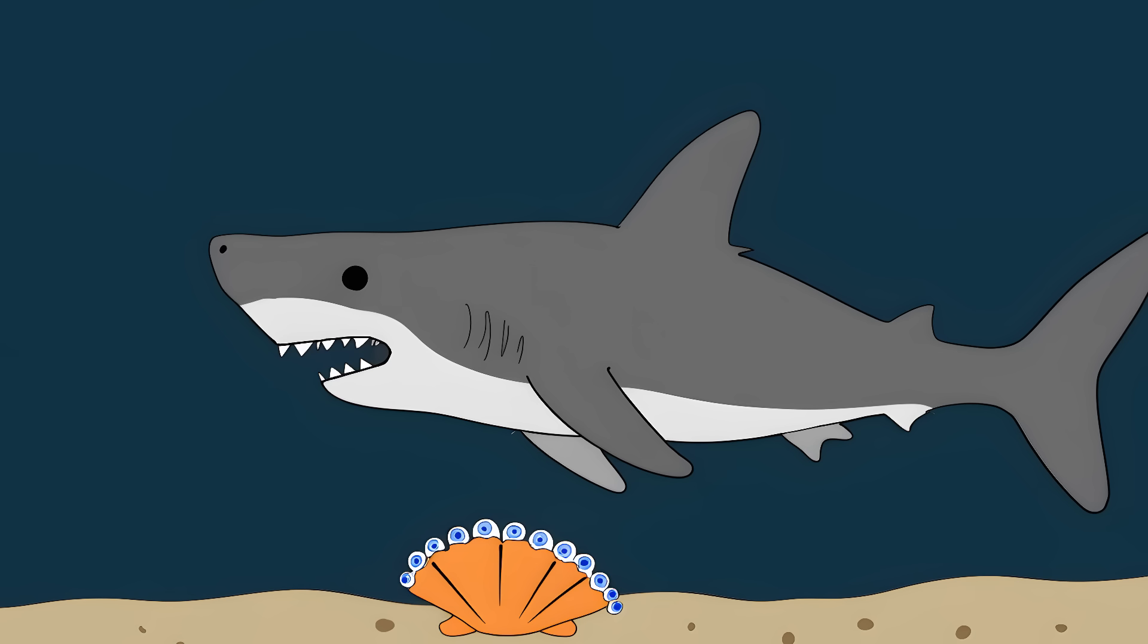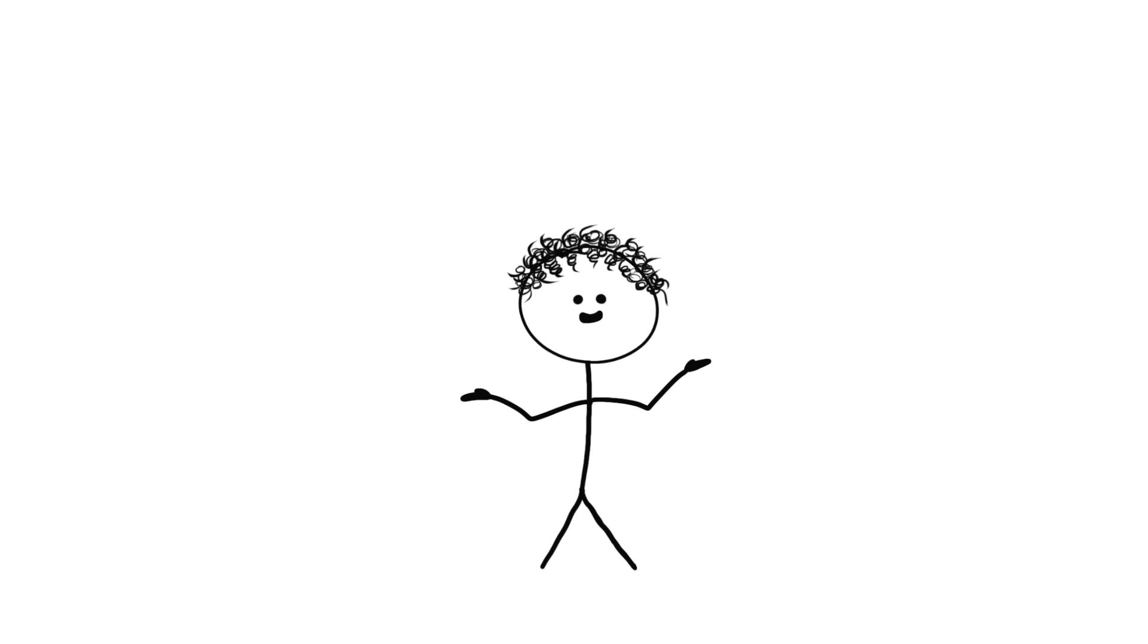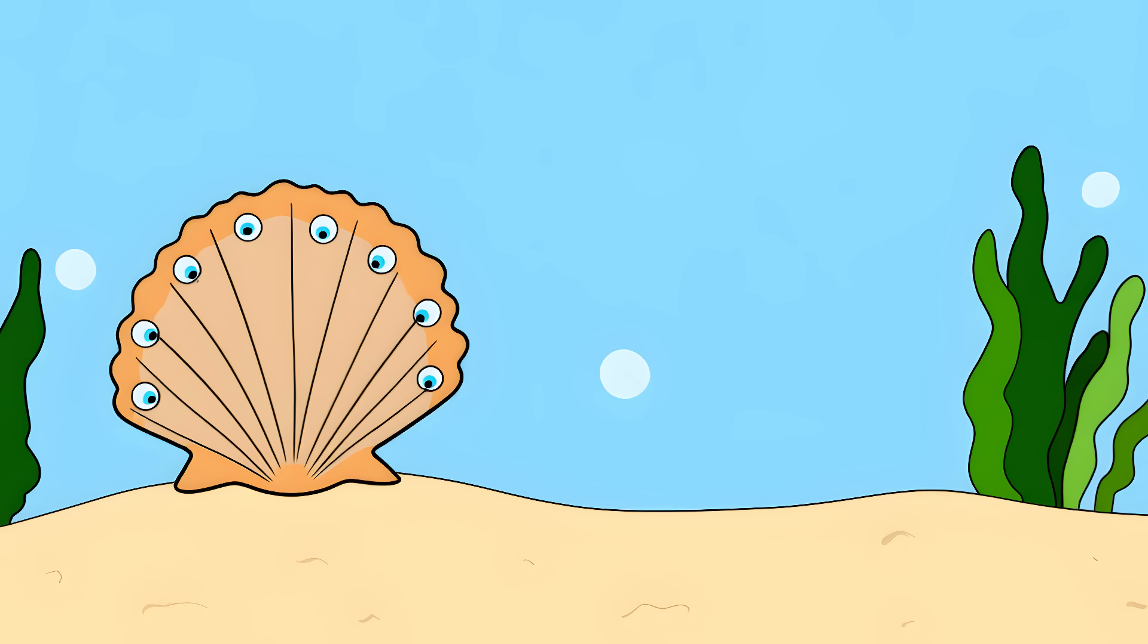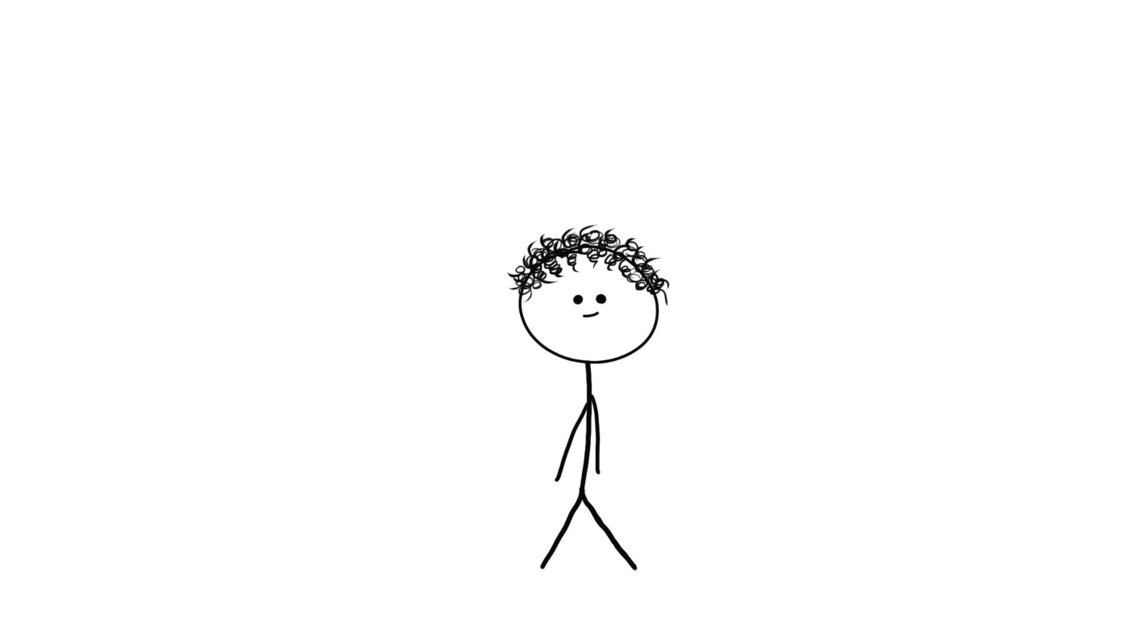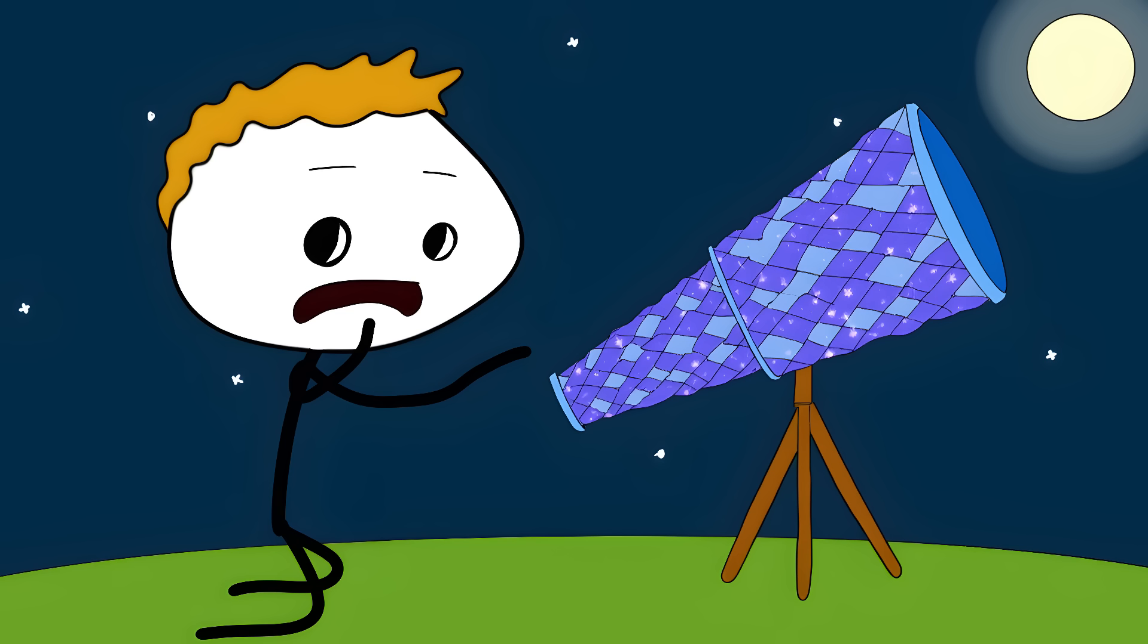Number 1: The Hundred Eyed Mirror. Ready for the grand finale? Scallops have not two eyes, not ten eyes, but two hundred eyes. And every single one is a tiny miracle of engineering. But these aren't your regular eyes. Each one is basically a microscopic telescope made of actual crystals.